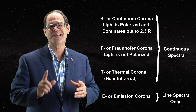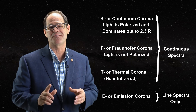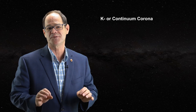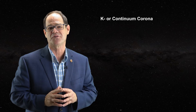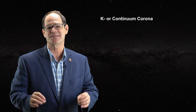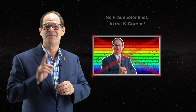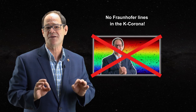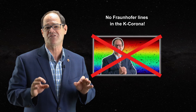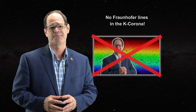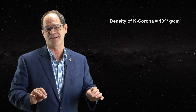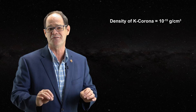Interestingly, the K coronal spectrum lacks the Fraunhofer absorption lines of the photosphere. The appearance and extent of the K corona changes with the solar cycle. In the standard model, the K corona is thought to have a density of less than 10 to the minus 15 grams per centimeter cubed.